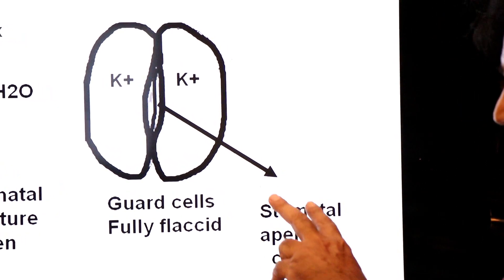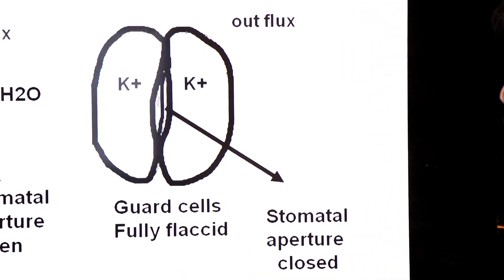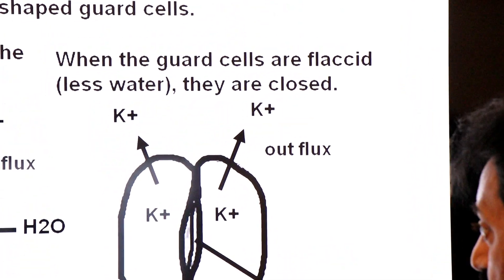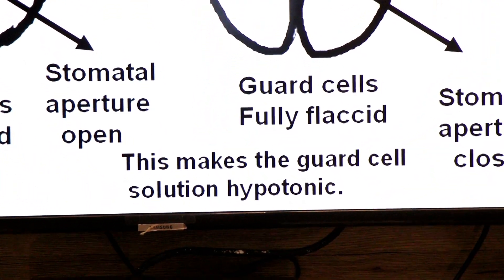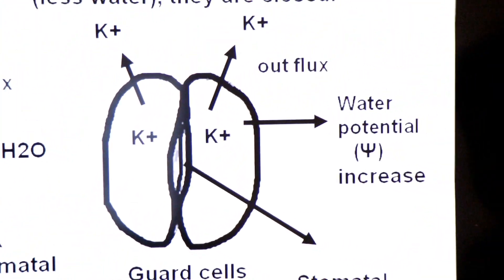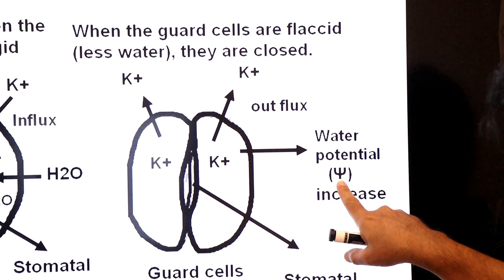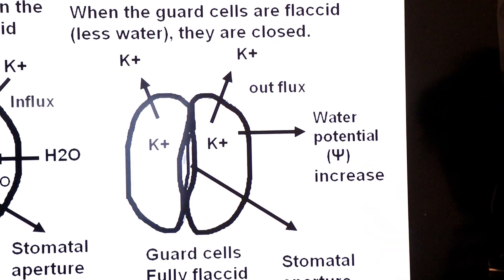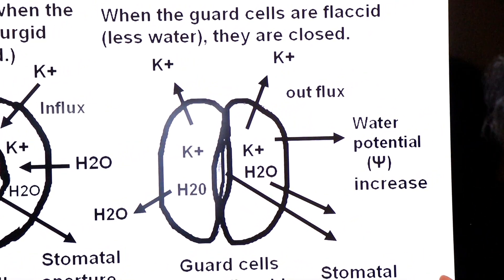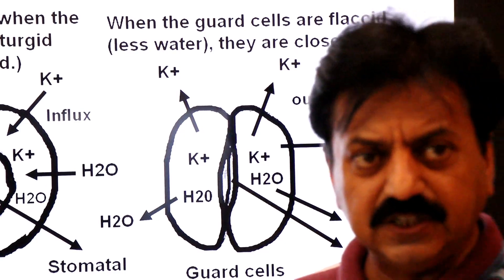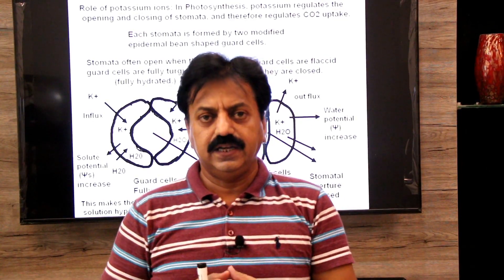At night, there is an outflux of potassium ions — the potassium ions that had entered the guard cells via influx now move outward. So solute potential decreases and water potential increases. This makes the guard cell solution hypotonic — having less solutes. Water potential, represented by the Greek letter psi (Ψ), refers to the capacity to lose water. The guard cells lose water via exosmosis, become flaccid, and the stomatal aperture closes. This is the role of potassium ions in opening and closing of stomata.